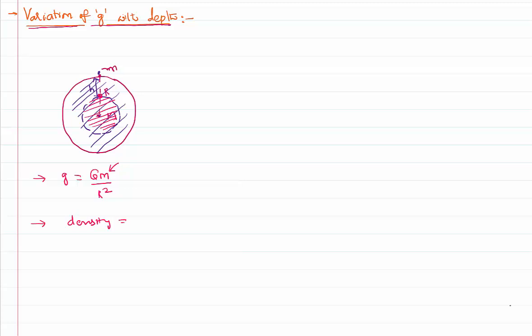Density of the earth is, any density is in fact, mass by volume. Assuming density as rho, mass as capital M, and assuming the earth approximately spherical, volume of a sphere is 4 by 3 pi r cube. So I can write mass of the earth as density into 4 by 3 pi r cube.